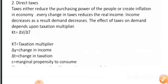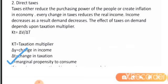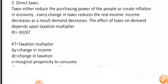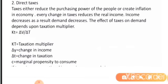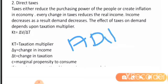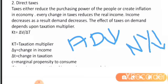Here, c represents the marginal propensity to consume. The effect of taxes is on real income and aggregate demand. There is an opposite relation — when taxes increase, national income and aggregate demand decrease. There is a direct relation between marginal propensity to consume and the taxation multiplier.